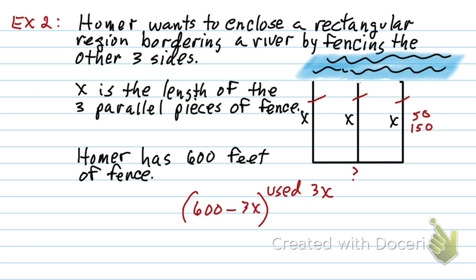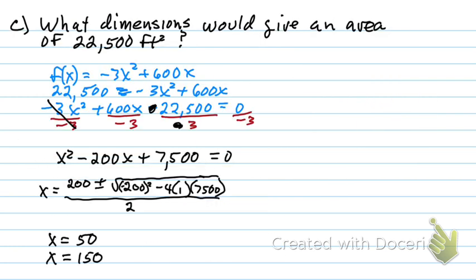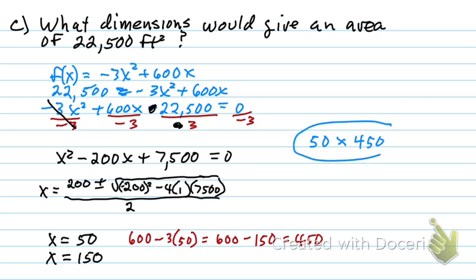Do we know this dimension down here yet? No, we don't. It's wanting the dimensions. So I have to go back over here and say, all right. If X is 50, then what's my other side? So I've got to say 600 minus three times that 50 to get that bottom part. Okay, so one set of dimensions is 50 by 450. There's dimensions. There's one set of dimensions.